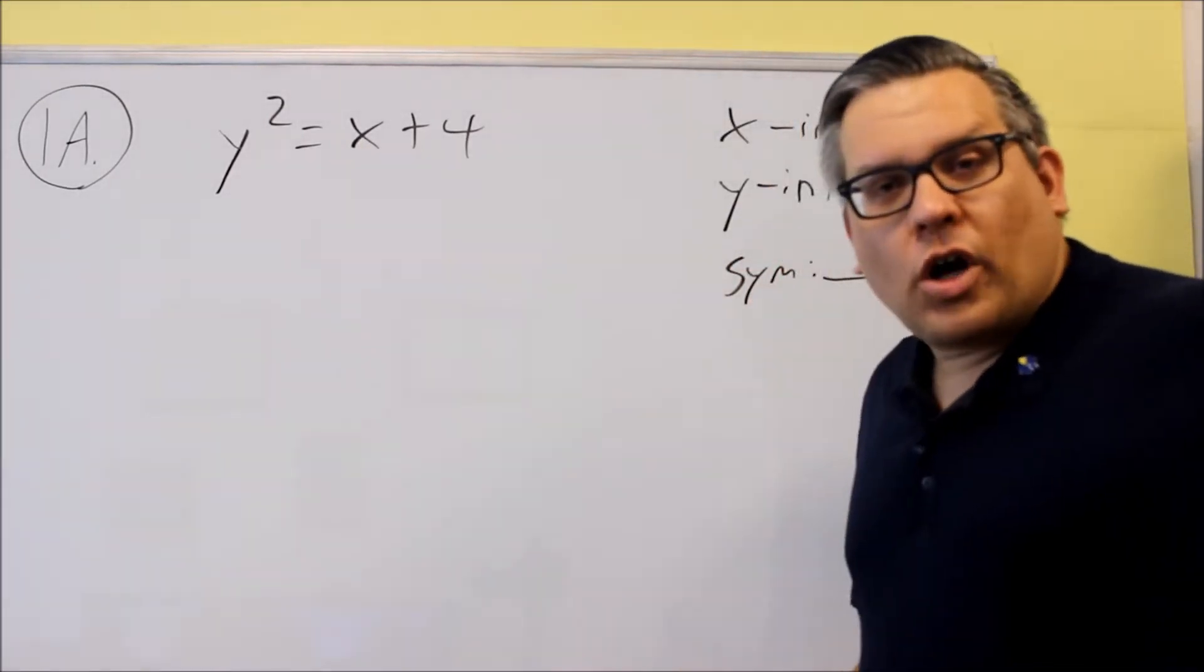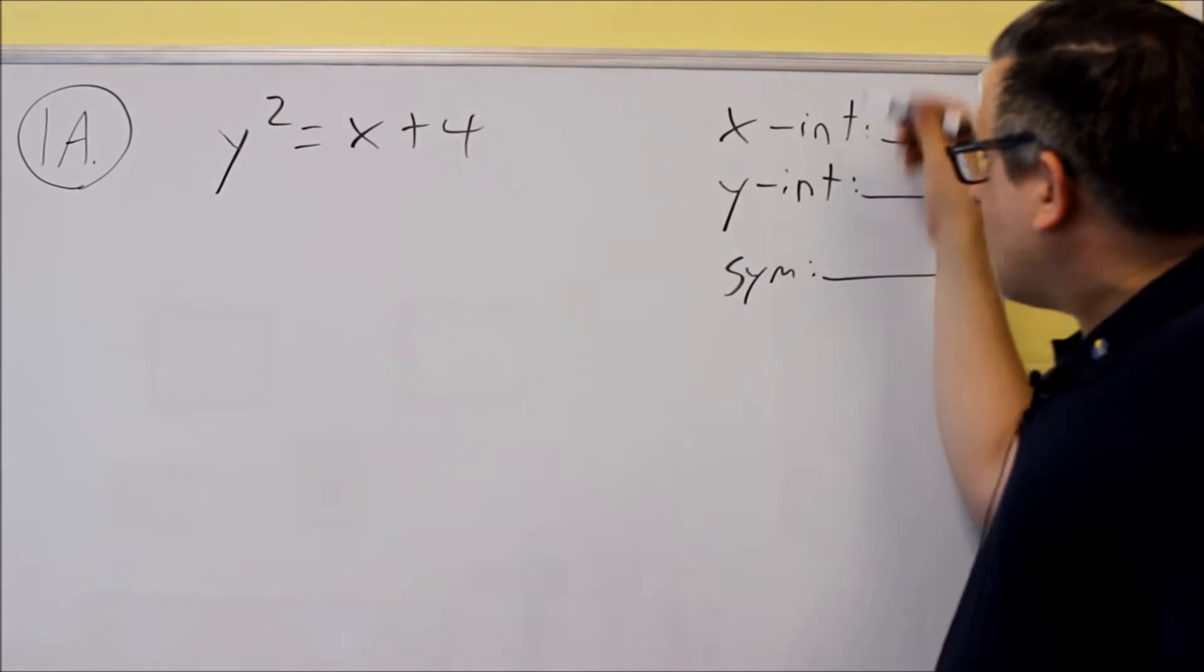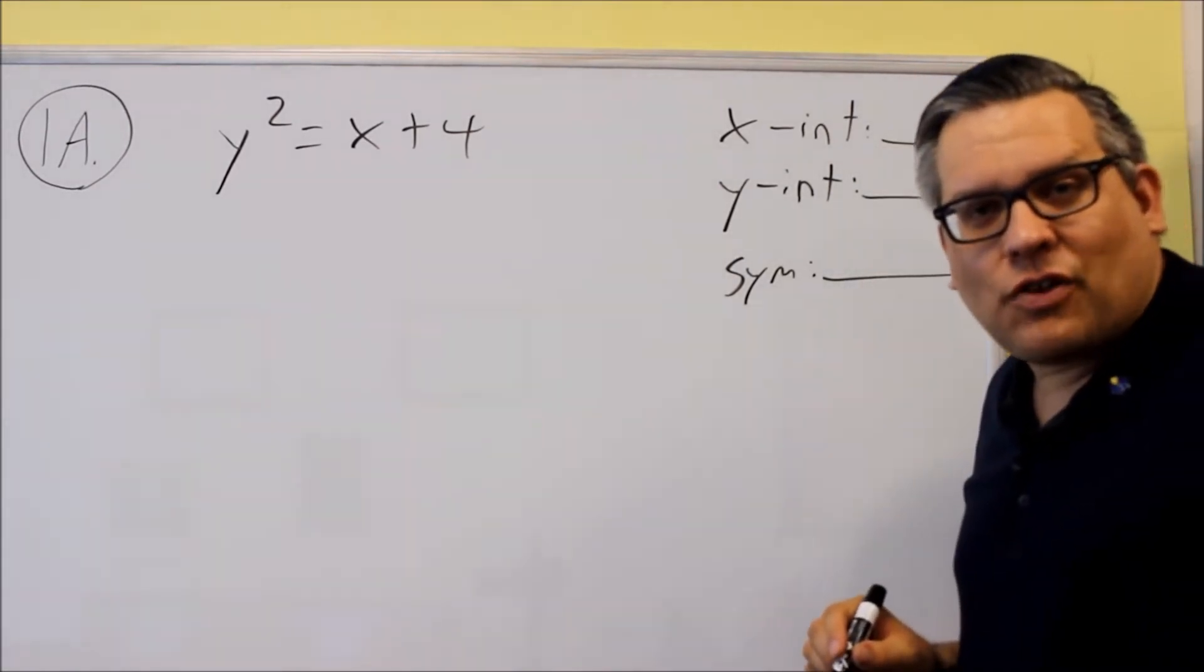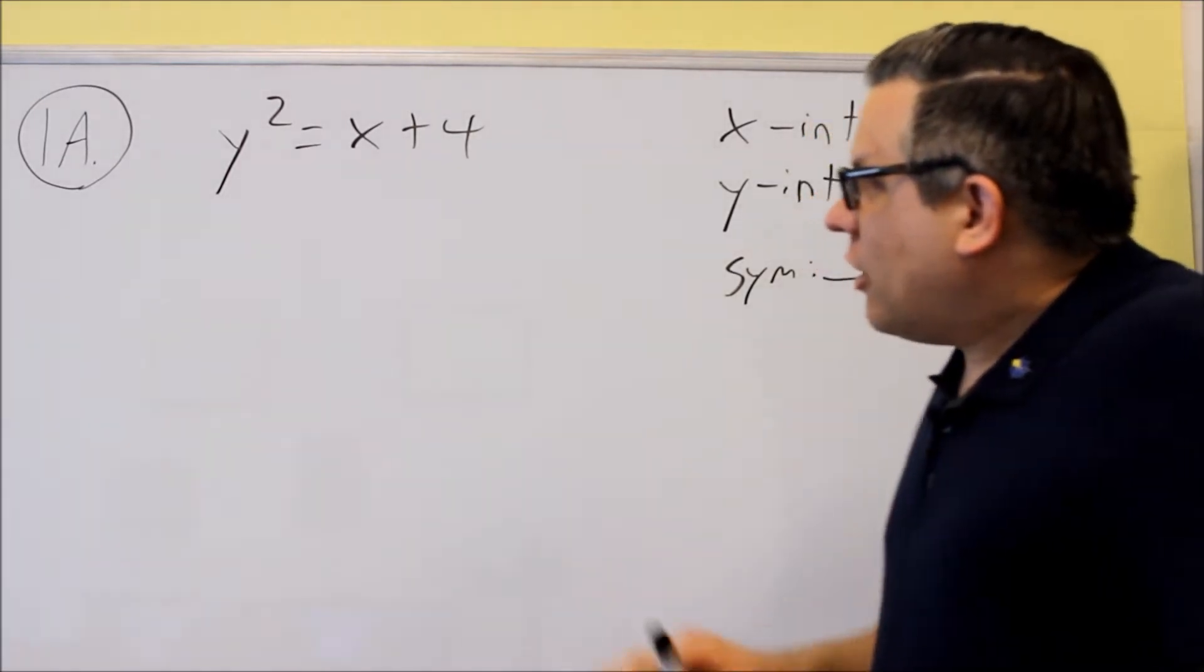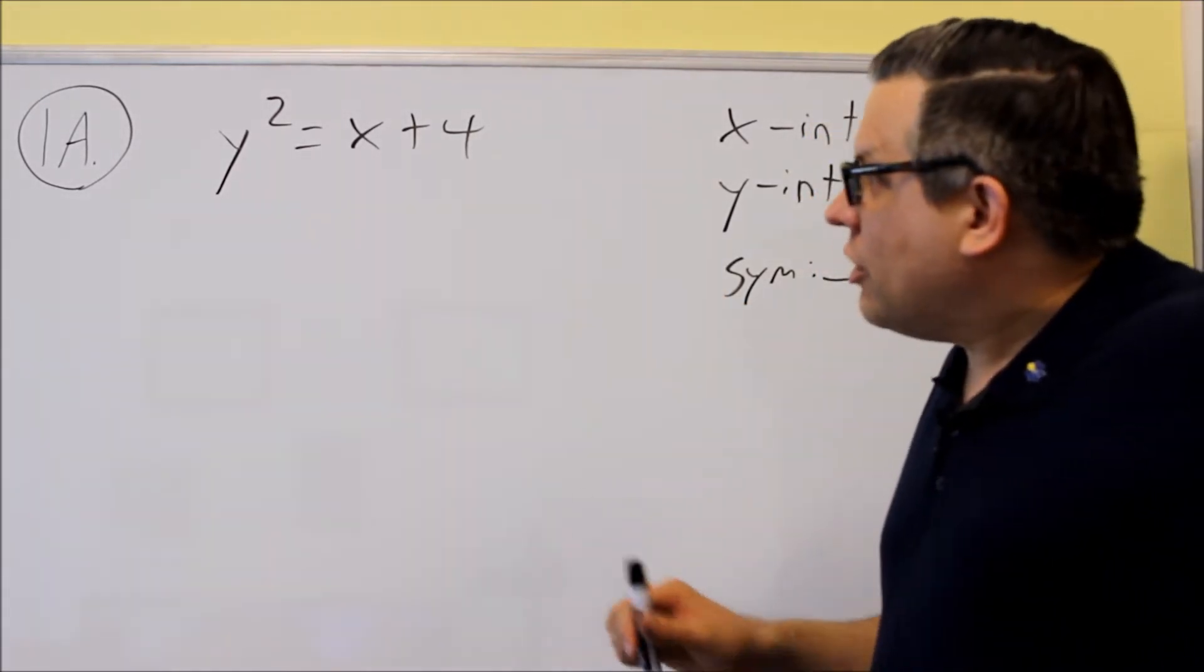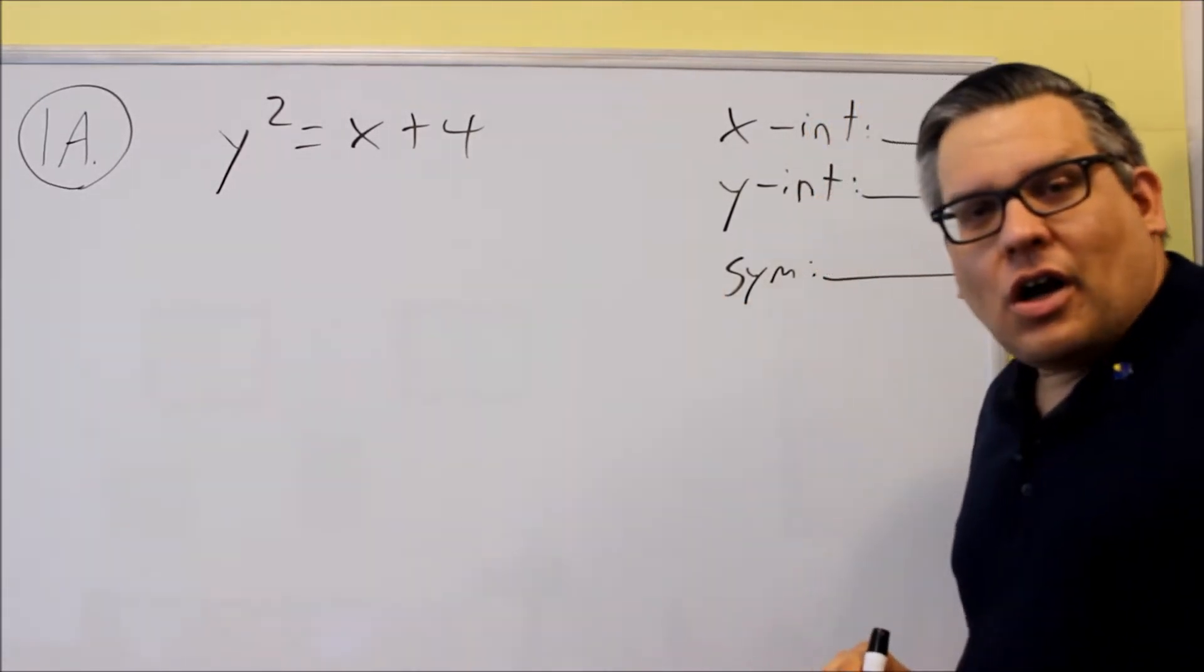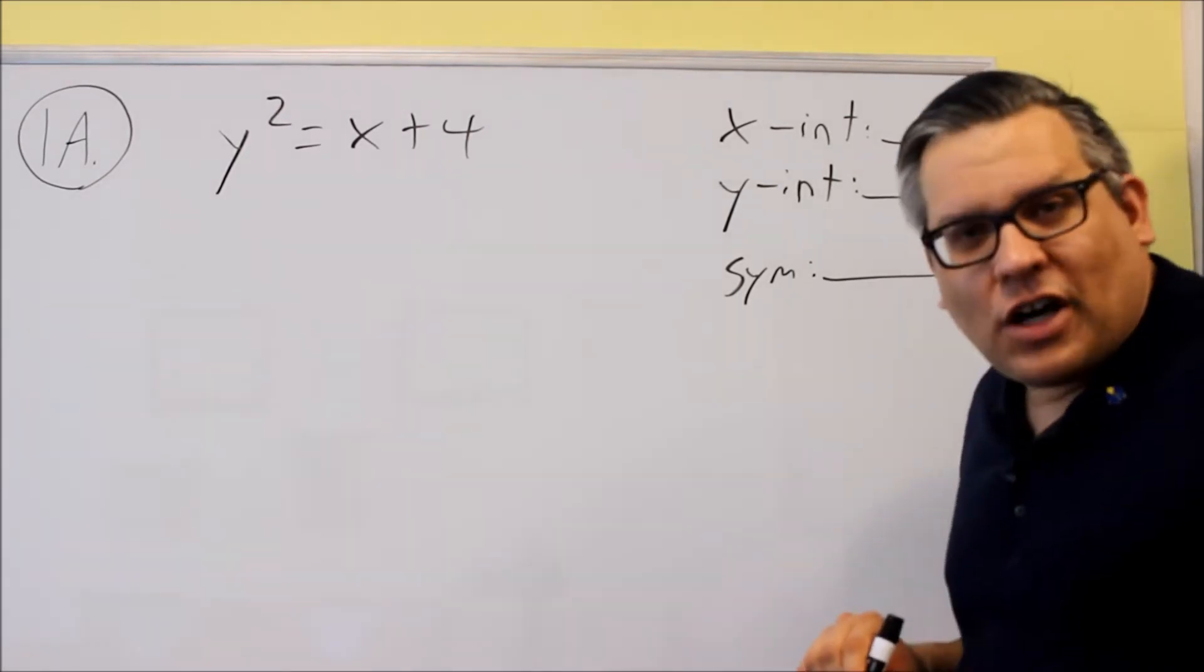We'll start with 1A. This first one is going to ask just these three things: it's going to ask you to find the intercepts and the symmetry. It will be something similar to this one, so y squared equals x plus 4. What we're going to do first is find the intercepts.